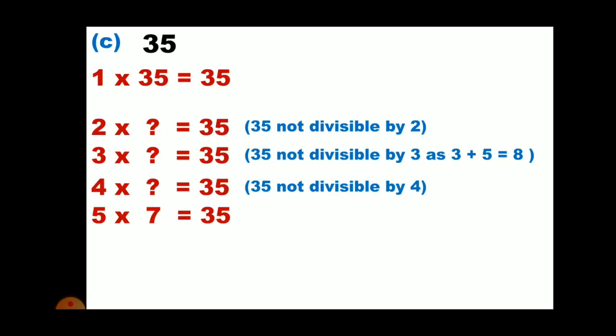So the numbers are repeating, that is 5 into 7 and the next one will be 7 into 5. We will stop here to find the factors.